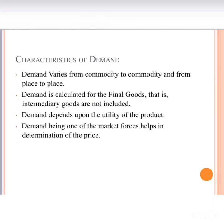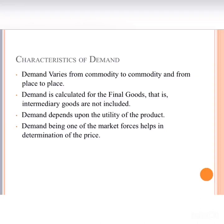Moving to the characteristics of demand: first, demand varies from commodity to commodity and place to place. For example, the demand for sweaters is higher in cold regions than in warm ones. Also, people need more food daily than clothing, so demand for food is generally higher. Second, demand is calculated for final goods, not intermediary goods. For a laptop, we calculate demand for the laptop itself, not its parts like buttons or charger separately.